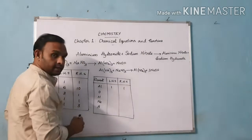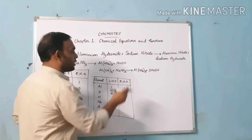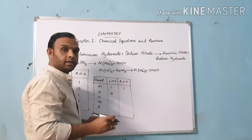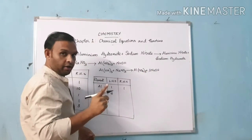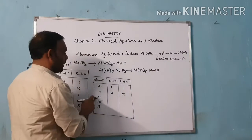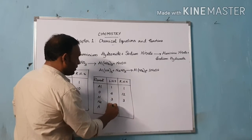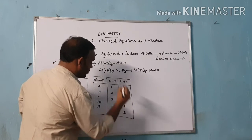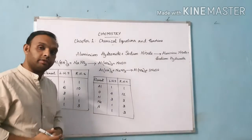Aluminium is 1, unchanged. Oxygen on LHS is 3 plus 3 = 6; on RHS, because we multiplied 3 before NaOH, it is 9 plus 3 = 12. Hydrogen is 3 on LHS and now also 3 on RHS — balanced. Sodium is 1 on LHS and 3 on RHS. Nitrogen is 1 on LHS and 3 on RHS. So aluminium and hydrogen are now balanced, but oxygen, sodium, and nitrogen are still not balanced.